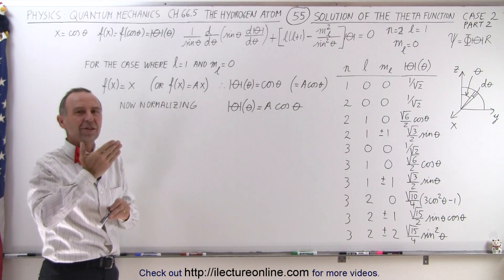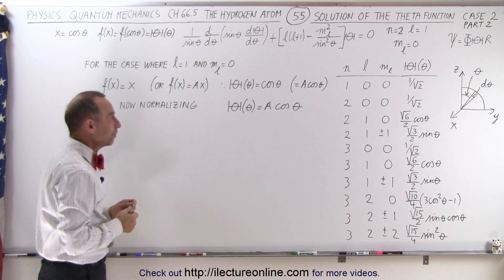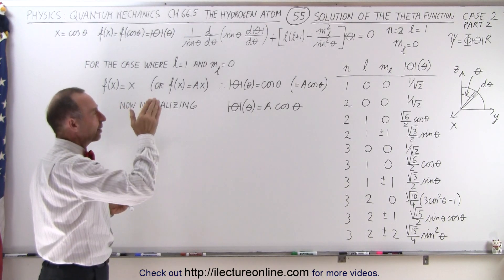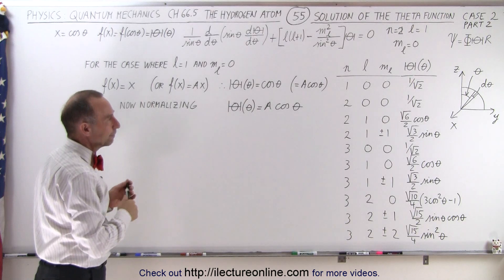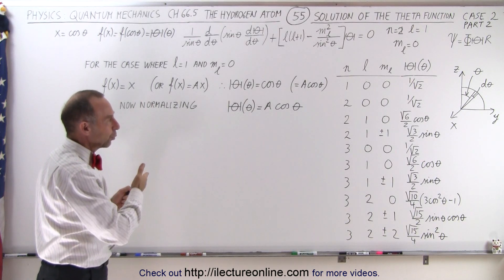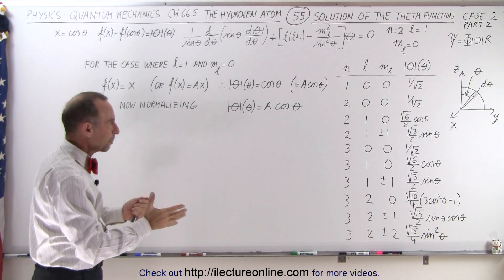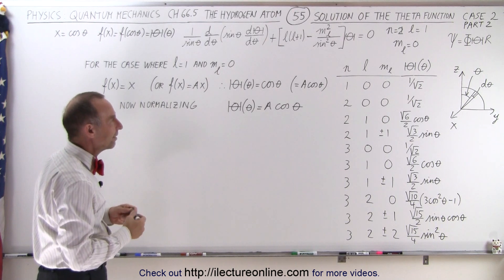We're just going to do half the distance and multiply the integral by two, so we integrate over that distance, and then we set that integral equal to one to have the total probability of where the electron could be in the Zena direction.